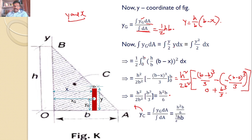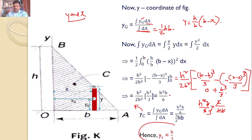Integral dA was already calculated as half H times B. So YC equals integral YG dA divided by integral dA equals (H²B/6) divided by (HB/2). Simplifying: H²B/6 times 2/(HB) — B cancels, one H cancels — giving YC equals H/3. Hence the Y coordinate of the centroid is H/3. Finally, the centroid of the right angle triangle OAB is at XC equals B/3 and YC equals H/3.